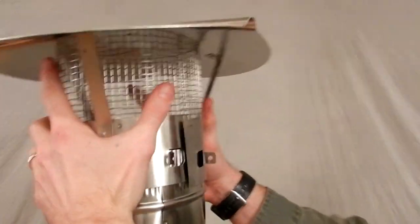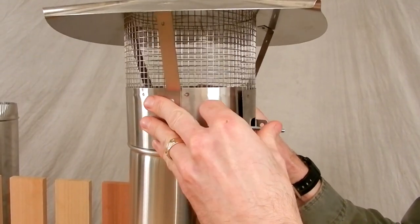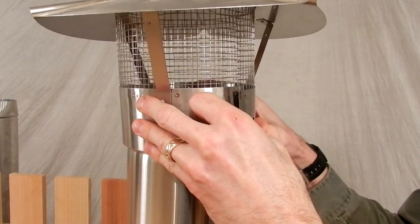Once you have positioned the cap on the crimped end of the stove pipe, feed the bolt through both holes and secure it with the nut.